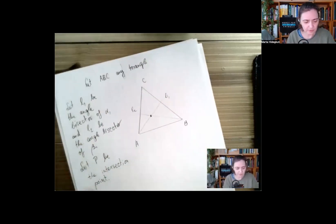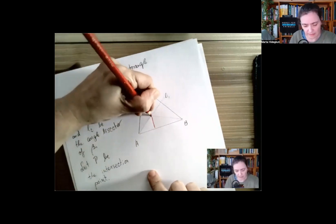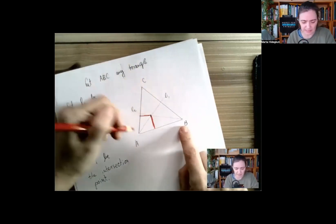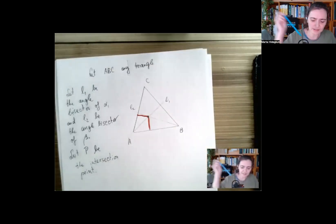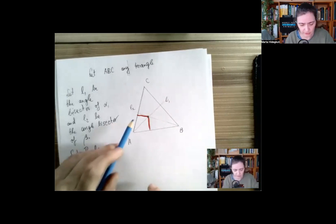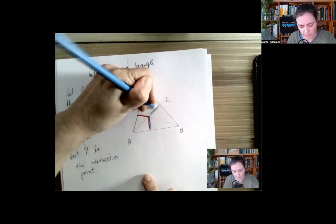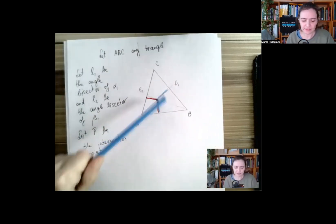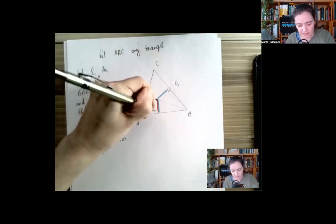Because point P is on the first angle bisector, the distance from this point to side AB and side AC are the same. But this point is also sitting on the angle bisector of beta, so these two blue distances are also equal.